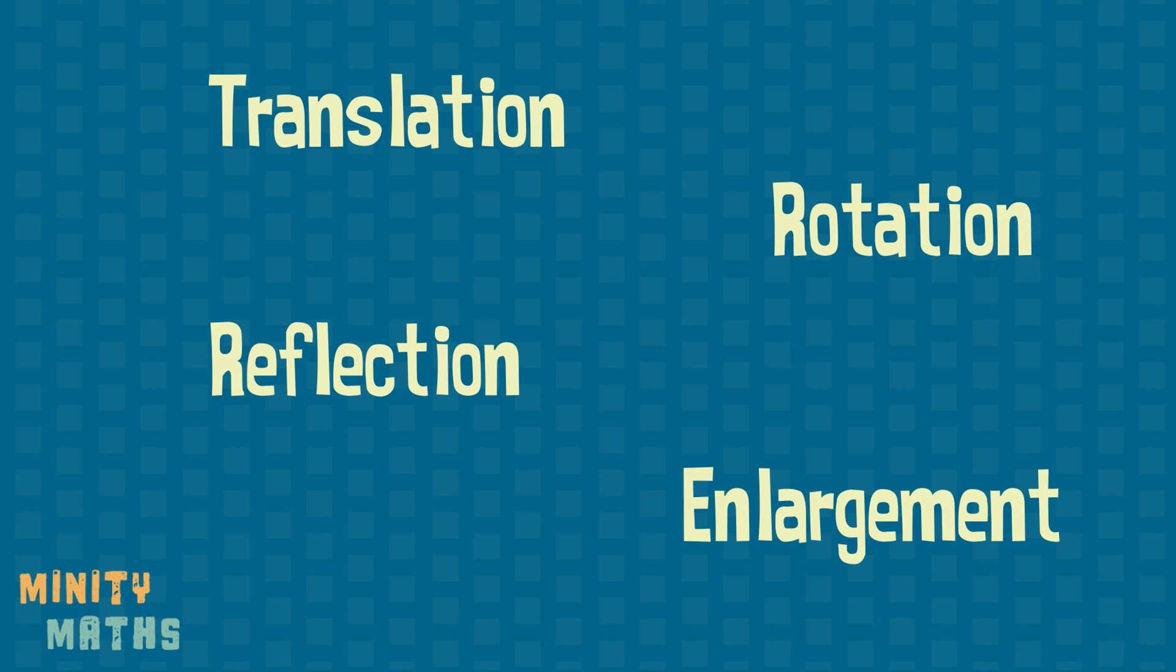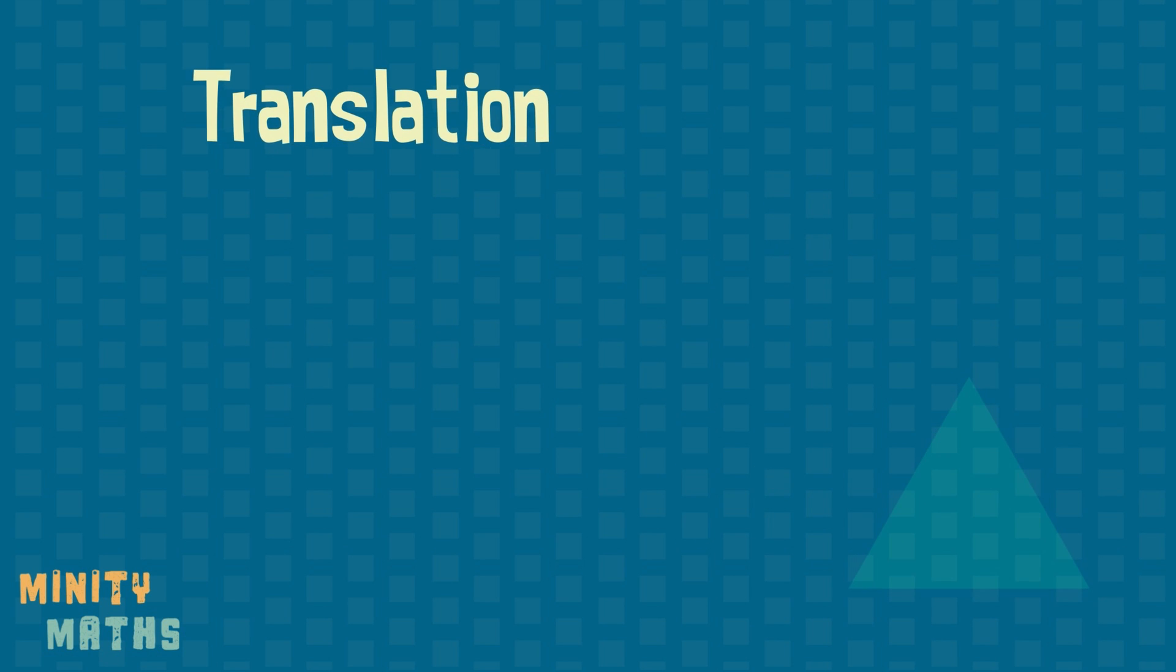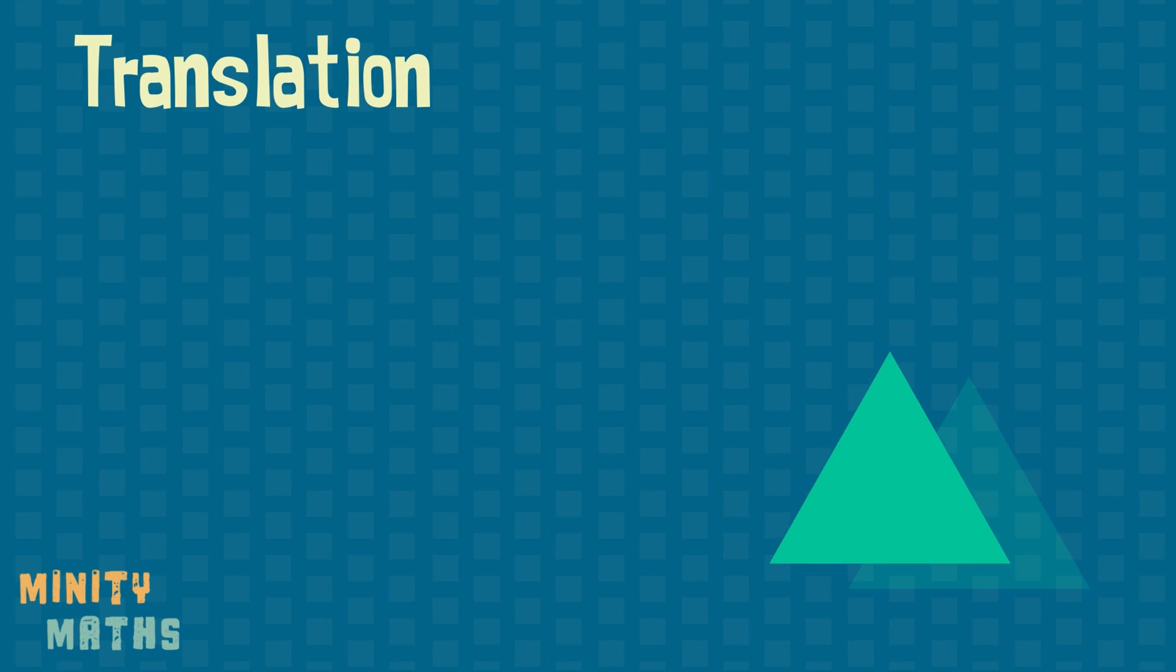Let's look at translation. Translation changes the shape's position. The shape can be translated left, right, up, or down. We measure these movements in units.